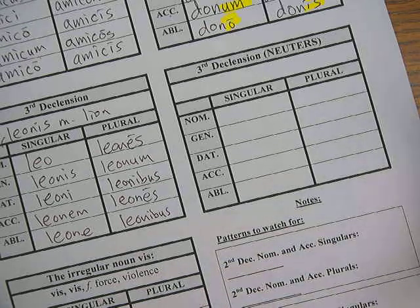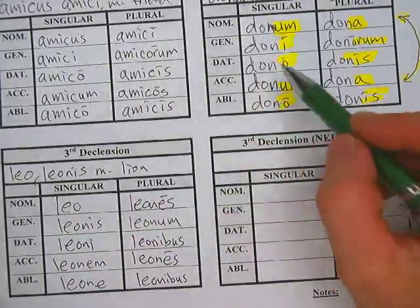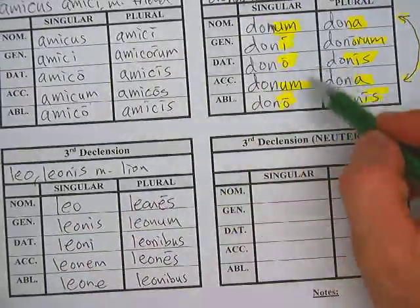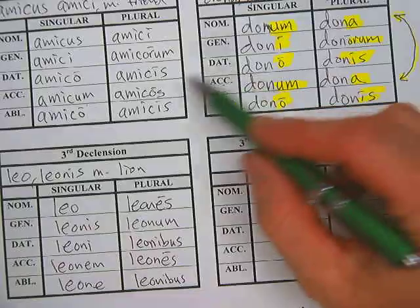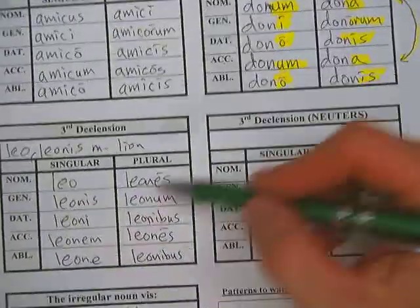We are back with third declension neuters, and these are going to follow much the same pattern as we saw at the second declension.